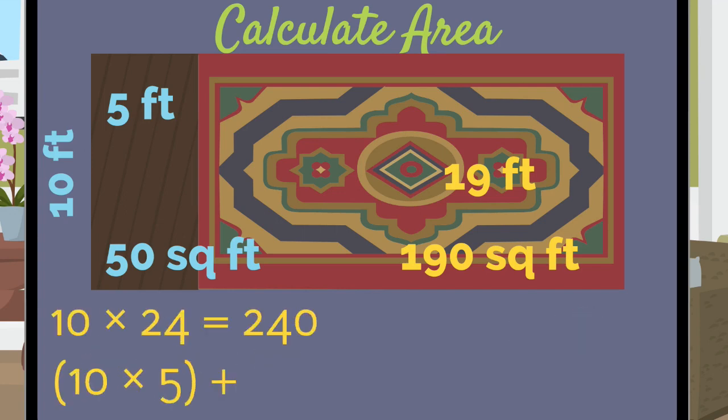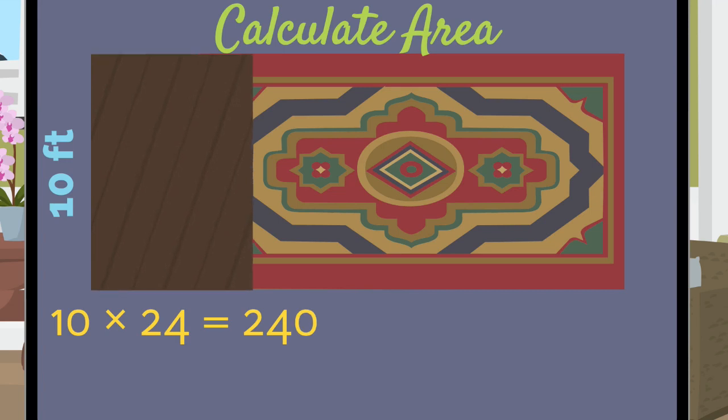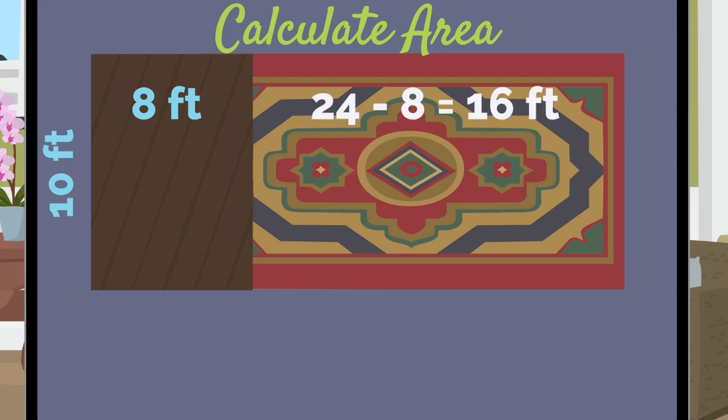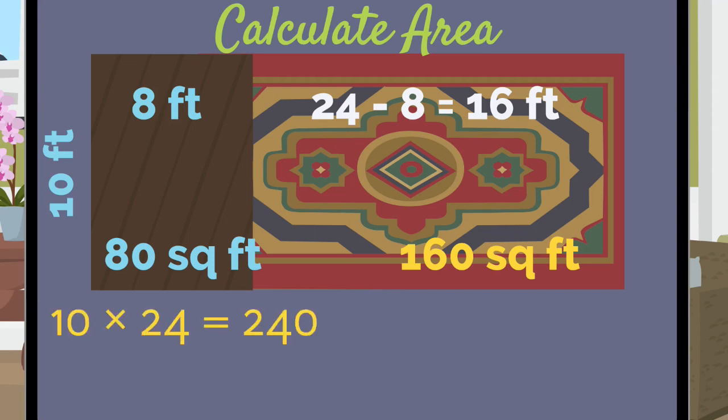Notice that the sum of the two separate areas is the same as the area of the whole amount. Do you think the relationship between the area of the whole and the sum of the parts will still be the same if I make the dining area larger? For example, I decide to make the dining area 8 feet wide to provide more room when family and friends visit. 24 minus 8 is 16. The area of the dining room is 80 square feet and the area of the living room is 160 square feet. The room is still the same size, 240 square feet. However, the dimensions of the pieces changed.